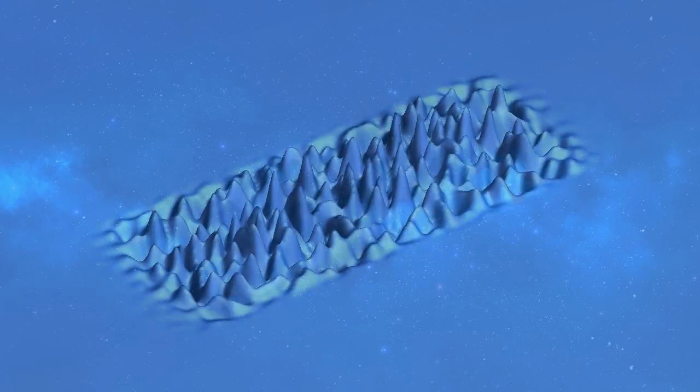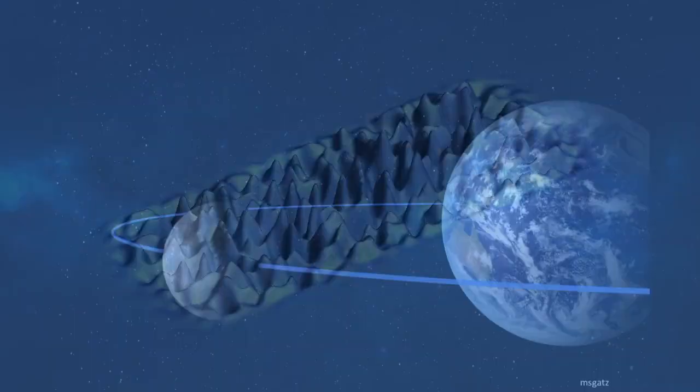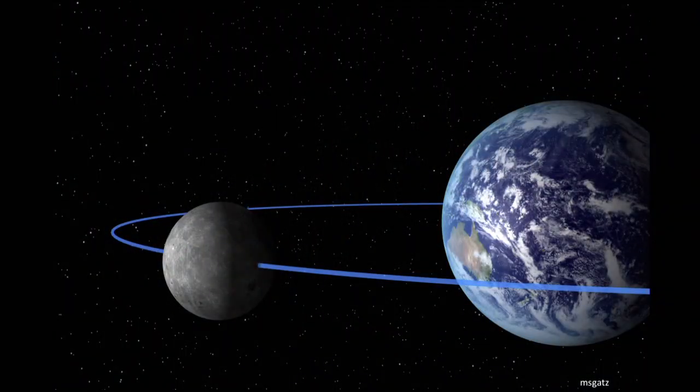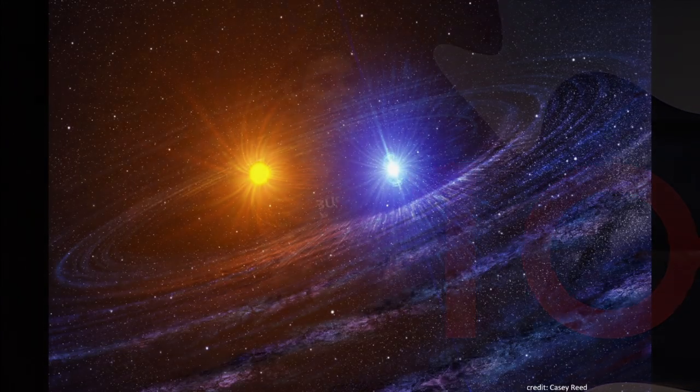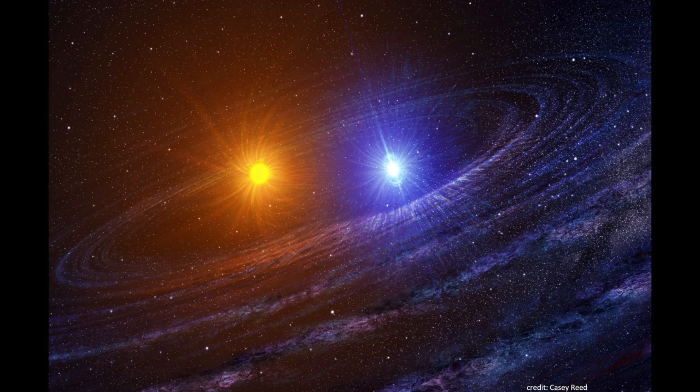And we understand gravity so well that we can predict the motion of the Moon around the Earth within a millimeter of precision. And this is in such impeccable agreement with observations that if we wanted to do any better, we would need to account for the leaves growing on the trees in the spring and falling down to the surface of the Earth in the fall and changing ever so slightly the motion of the Moon around the Earth. We understand gravity so well that we can look at distant stars spinning around each other some 21,000 light years away from us and predict that these two stars should get closer to one another at a rate of less than an inch per year. And that again is impeccable agreement with observations, and a direct confirmation that gravity waves really do exist.